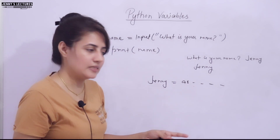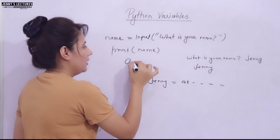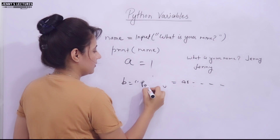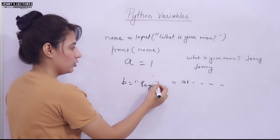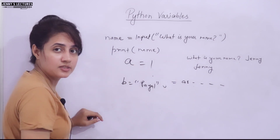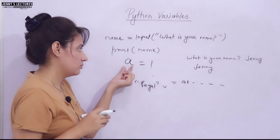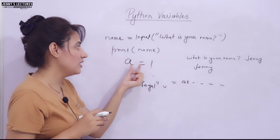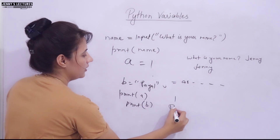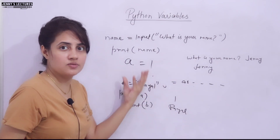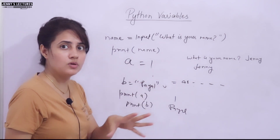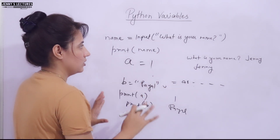Variables are just containers to store data values. For example: a = 1, or b = 'pile' — a string you can put in double or single quotes, your choice. Notice I'm not telling any data type — not integer, not string, not float — nothing. The variable is created the moment you first assign a value. Then you can print(a) and it will print 1, print(b) and it will print 'pile'.